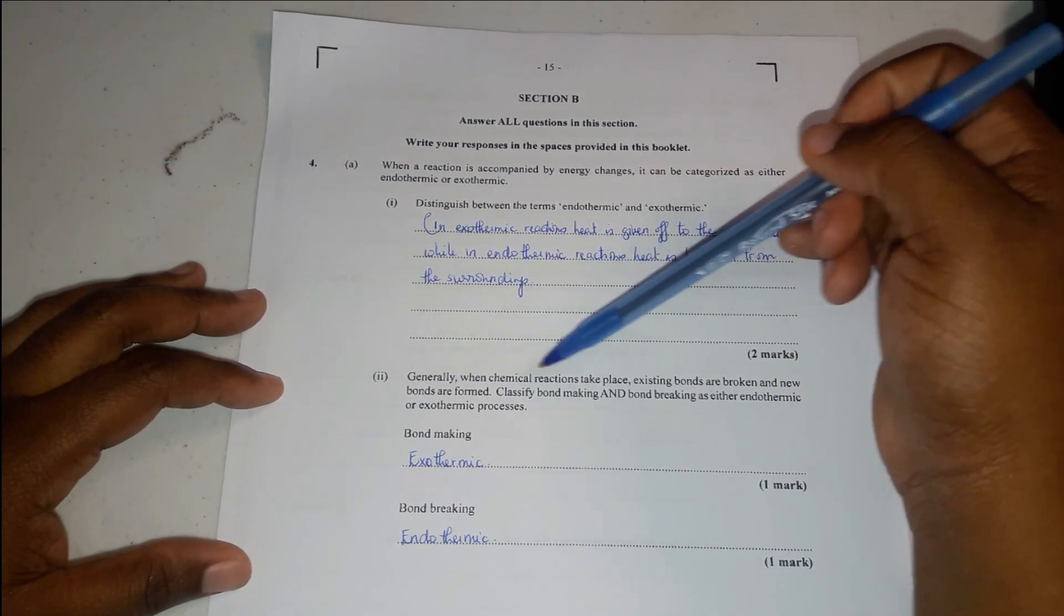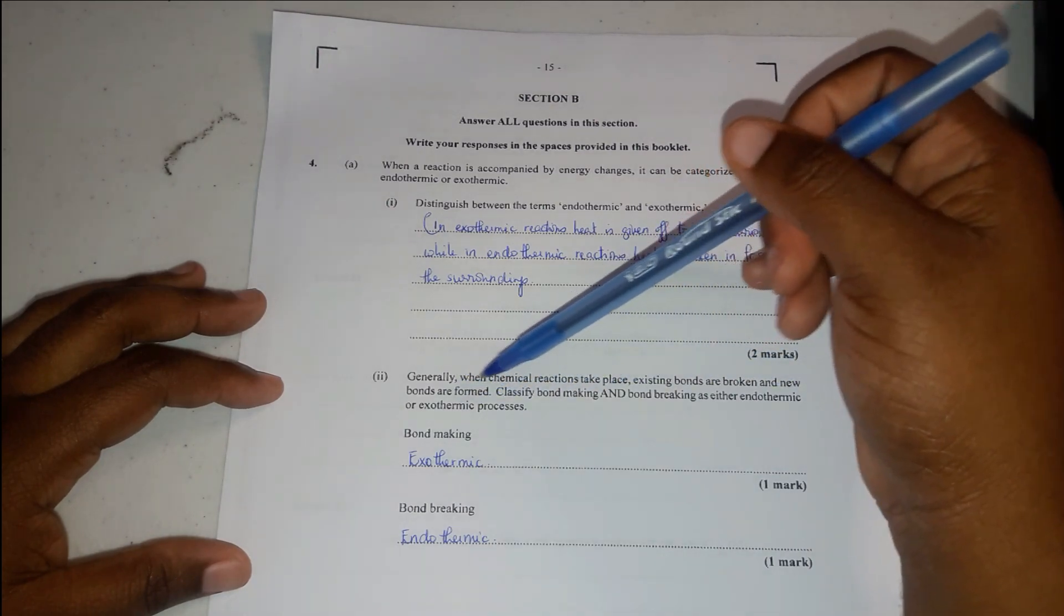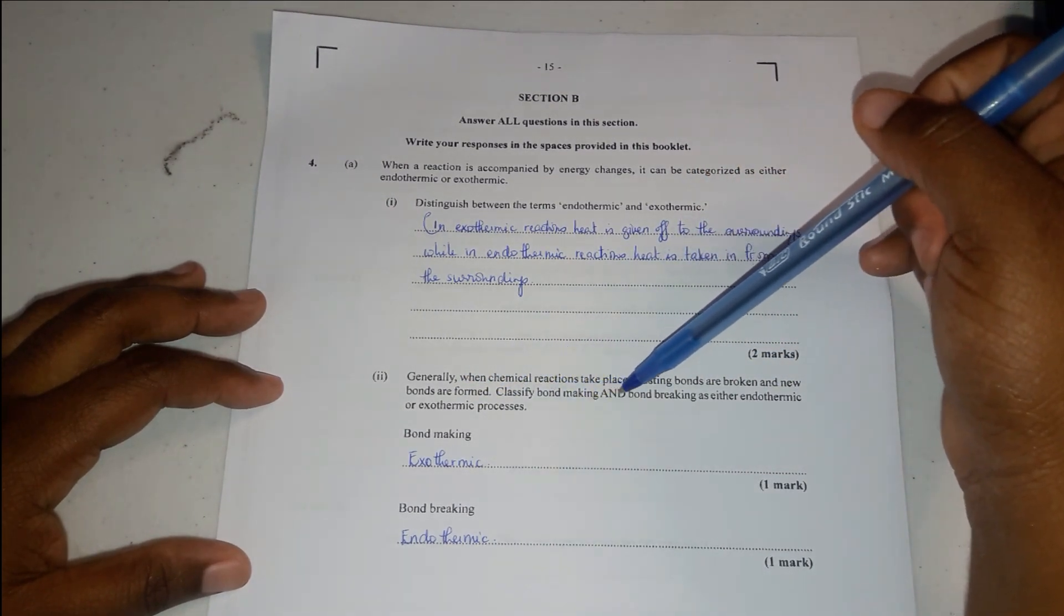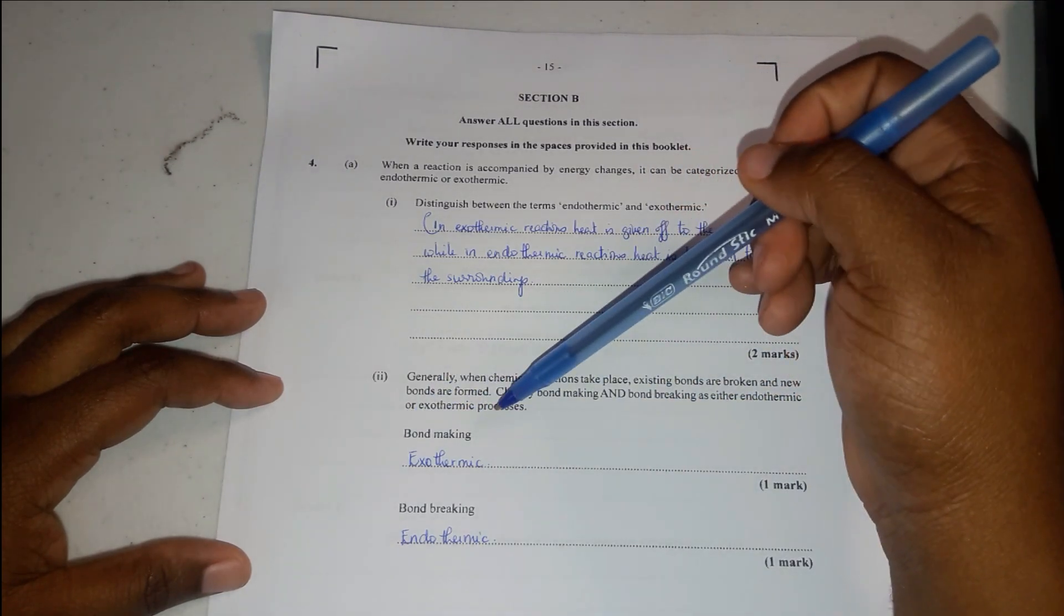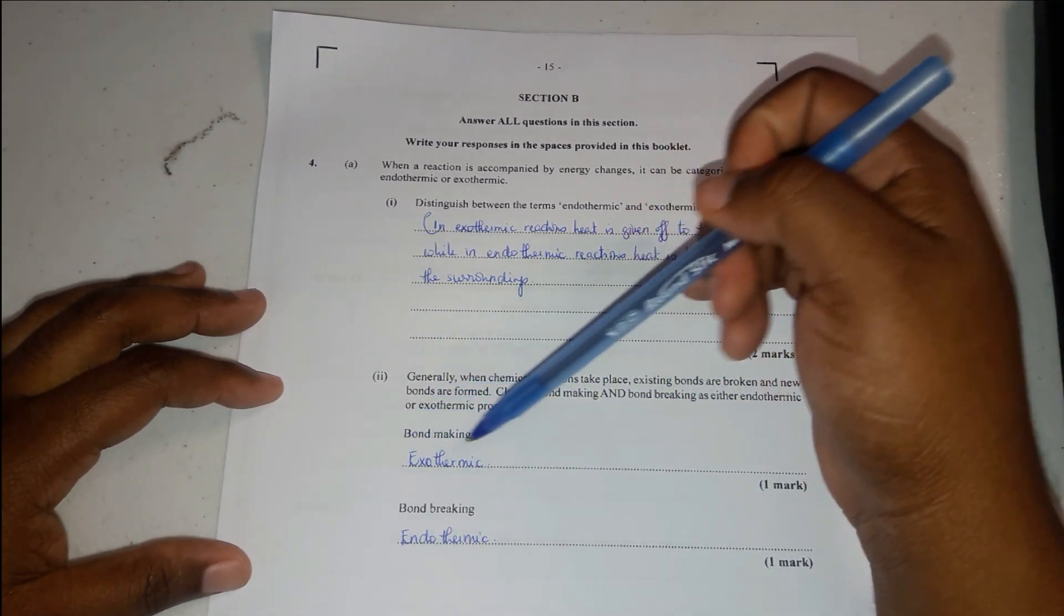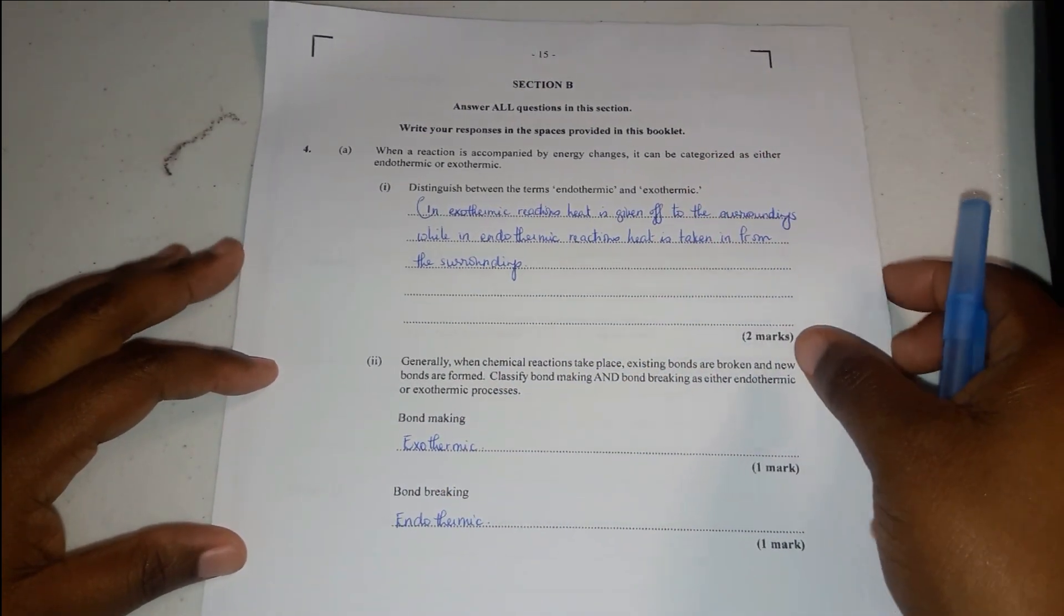Generally, when chemical reactions take place, existing bonds are broken and new bonds are formed. Classify bond making and bond breaking as either endothermic or exothermic processes. Bond making is exothermic, whereas bond breaking is endothermic.